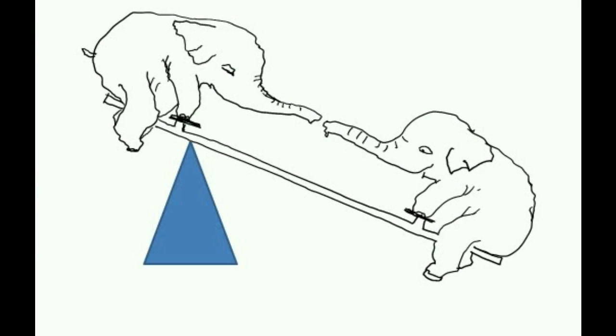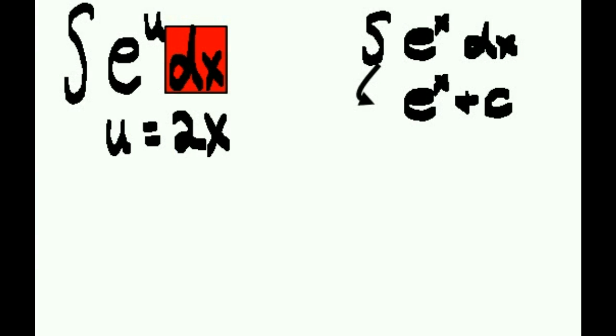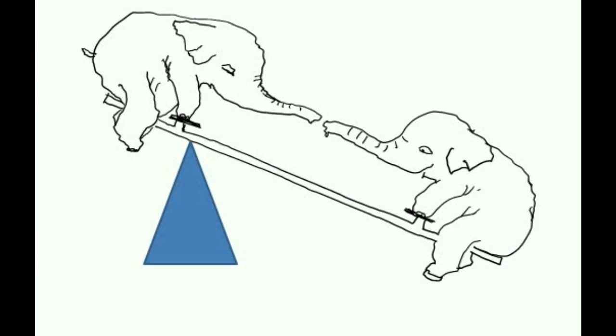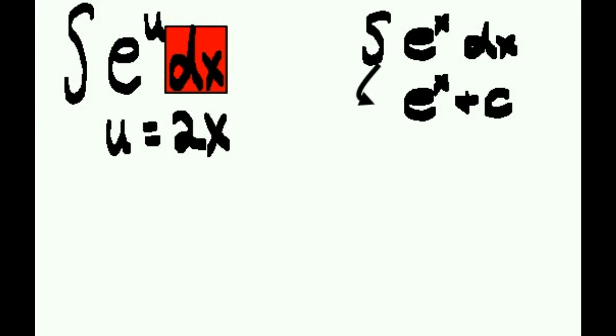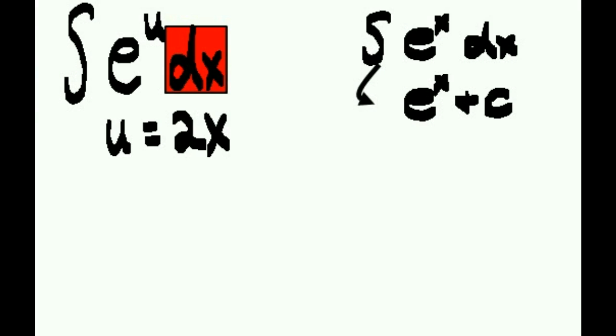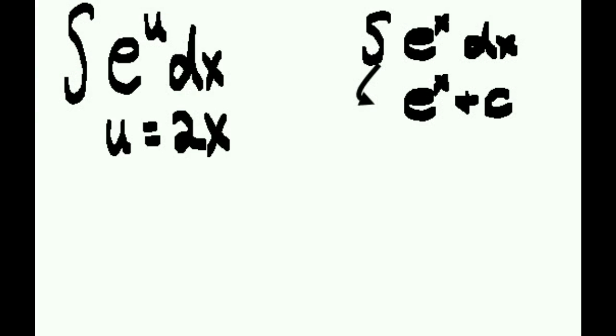Now how do we do that? The dx is the key. We changed this part to u—it was 2x, now it's u—and created this imbalance. Now we'll change this part, dx, and restore the balance. Now how do we do that? Well, we'll start right back here where we left off, which is u equals 2x.